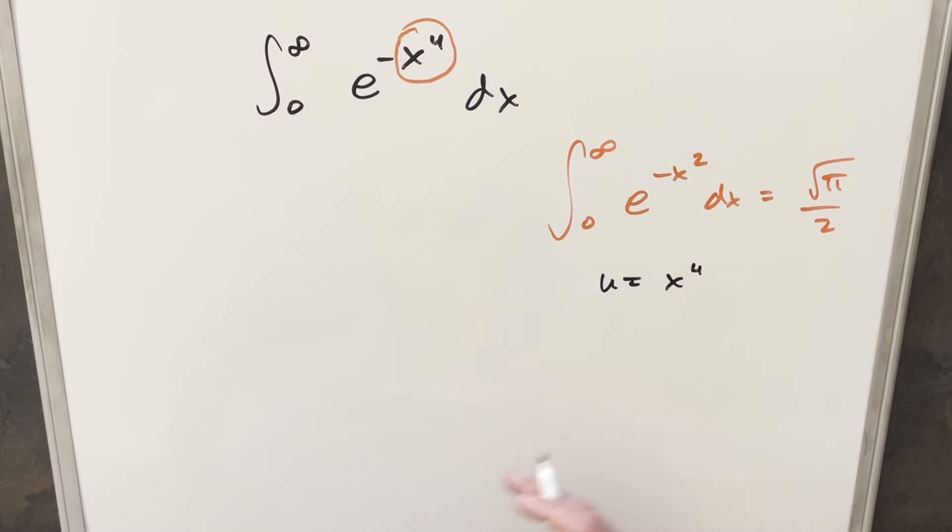Then before I take the derivative, let's just raise both sides to the 1/4th power. Just to isolate x, we get x equal to u to the 1/4th. And then I'll go ahead and take a derivative. So for dx, we're going to have, this is going to become a power rule, 1/4th u to the minus 3/4ths du.